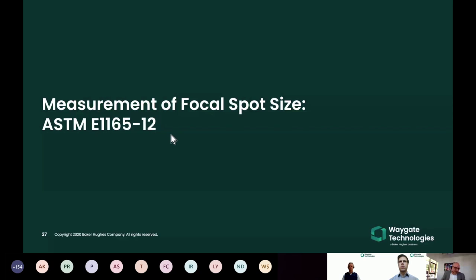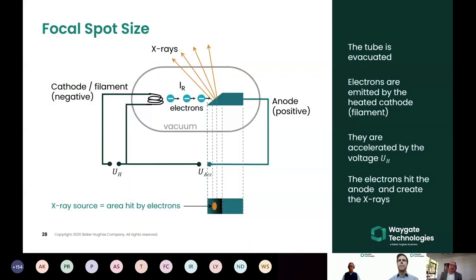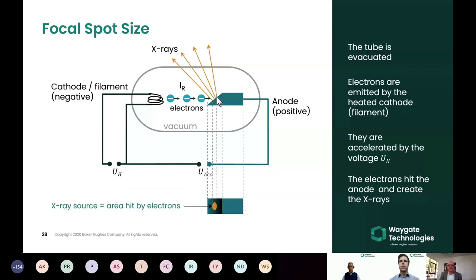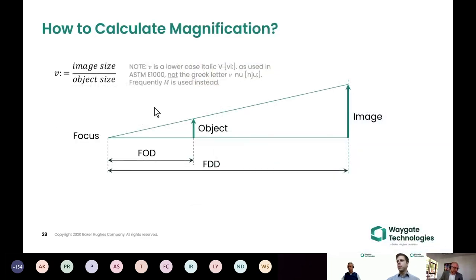Now we look at the focal spot size of the tube, which also contributes to unsharpness. In a simple X-ray tube, electrons from the filament hit the anode target, creating a spot from which X-rays are emitted - this is the focal spot, and its size defines the X-ray source size. Measuring this is difficult; you cannot directly observe it, so we need an indirect method.